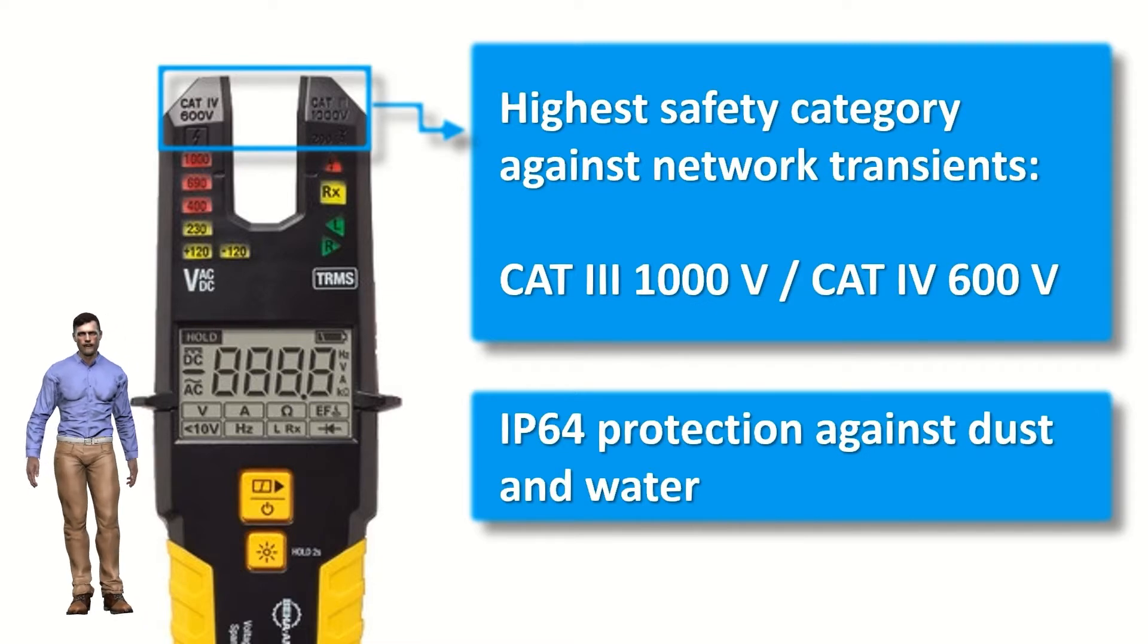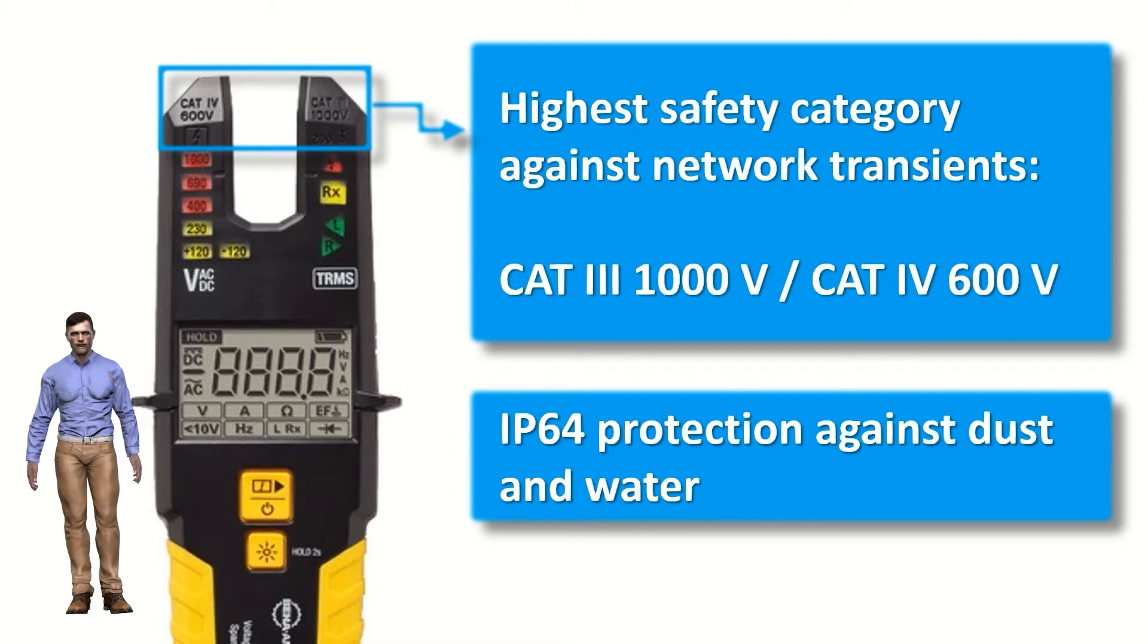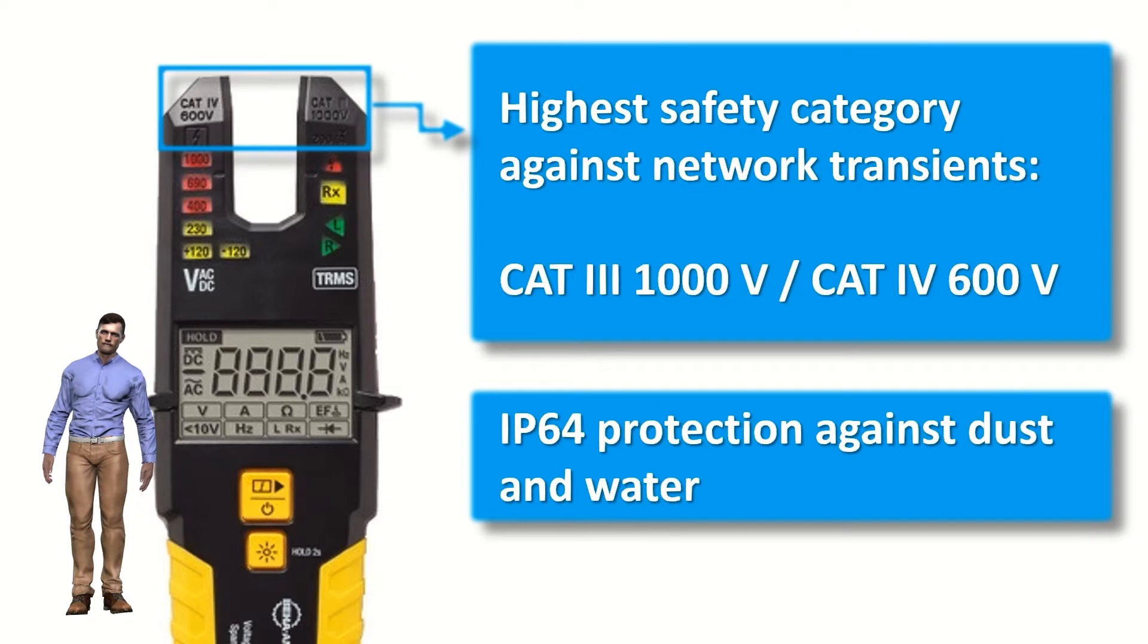Its electrical safety against network transients is Category 3, 1000 volts and Category 4, 600 volts, so it can be used not only at any point in a three phase or single phase installation, but also at the point of connection with the network, an area that requires a protection Category 4.